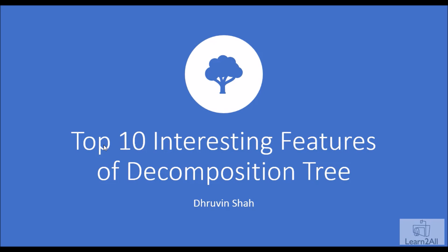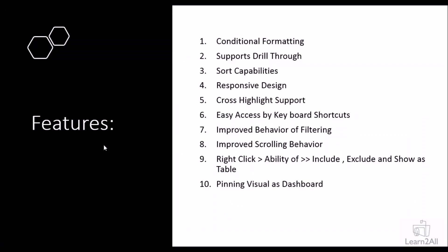In this session, I'm going to talk about the top 10 interesting features for the Decomposition Tree AI visualization in Power BI. We all know that for root cause analysis, the Decomposition Tree is the best visualization, and it has a lot more capability. The features include conditional formatting, drill through support, sort capability, responsive design, cross highlight support, easy access by keyboard shortcuts, improved filtering behavior, improved scrolling behavior, include/exclude and show as table, and pinning the visual as a dashboard.